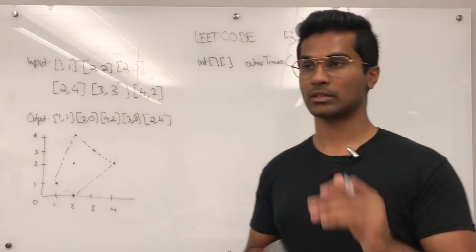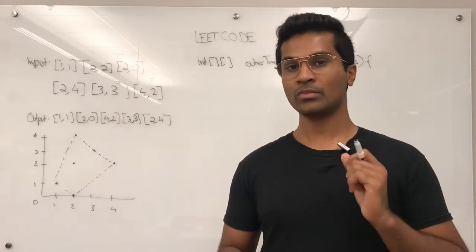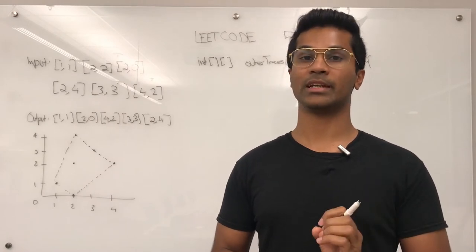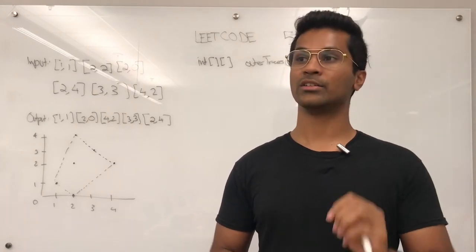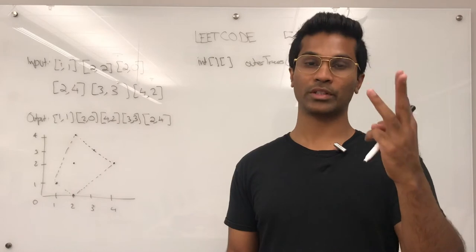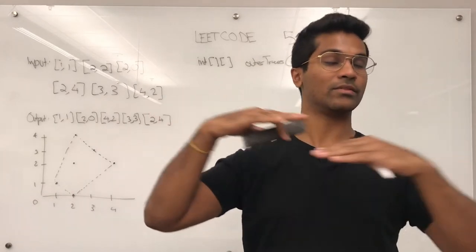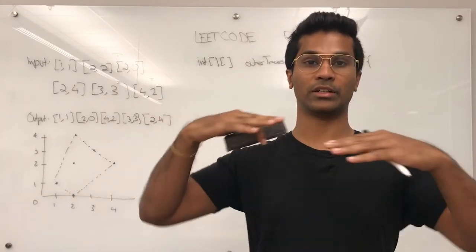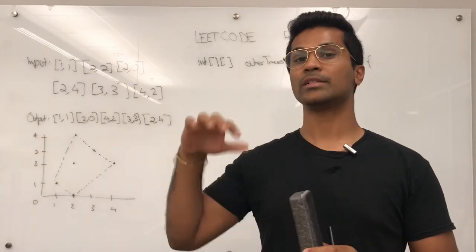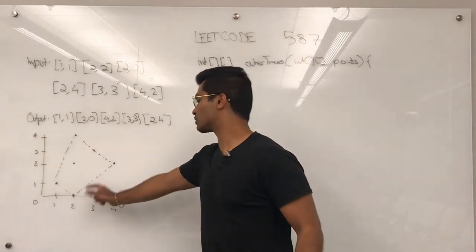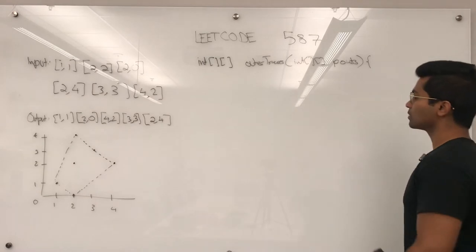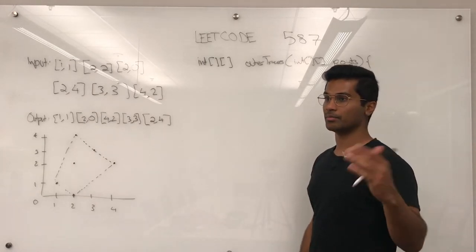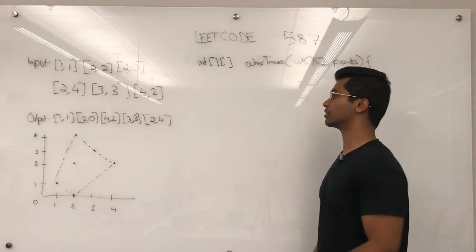And before I get into the code there's a couple of things you have to keep in mind. One, we have to understand what the orientation of three points means and two, if three points are on the same line, like if they form a collinear and if they form like a line segment, based on that we can start constructing this. So I'm going to write the code for that stuff first.